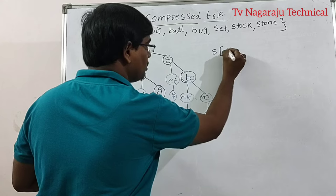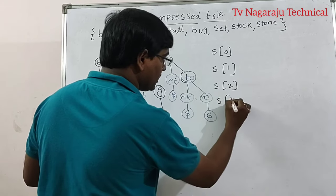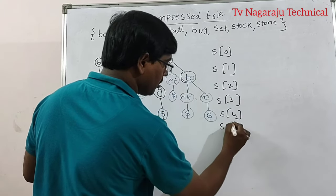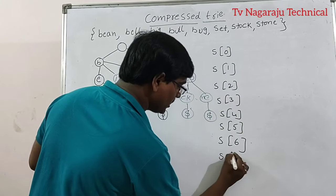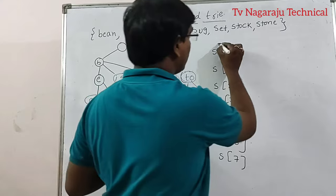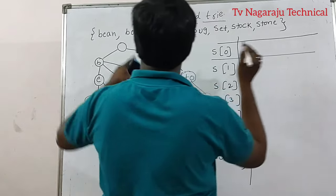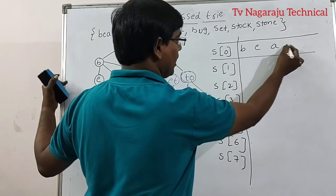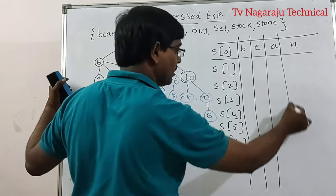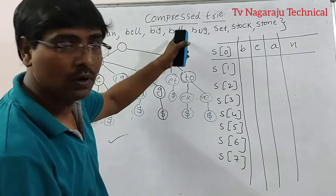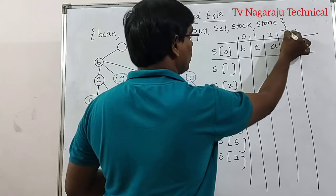I will construct a table for easy understanding. The strings are: S0=bean, S1=bell, S2=big, S3=bull, S4=bug, S5=set, S6=stock, S7=stone. Each string's characters are indexed starting from 0. For bean: B is at index 0, E at index 1, A at index 2, N at index 3.